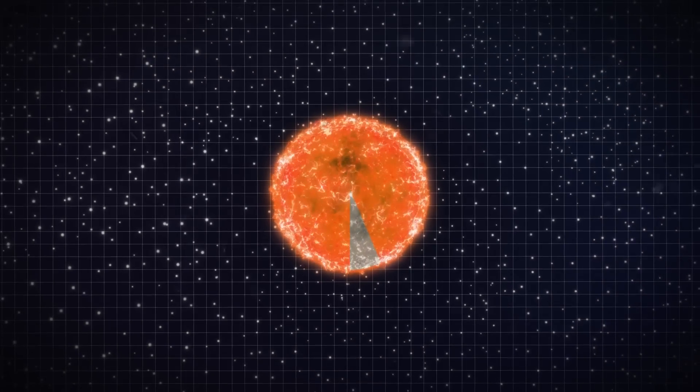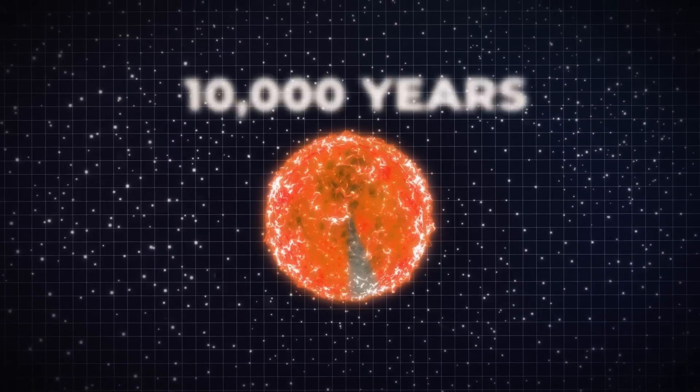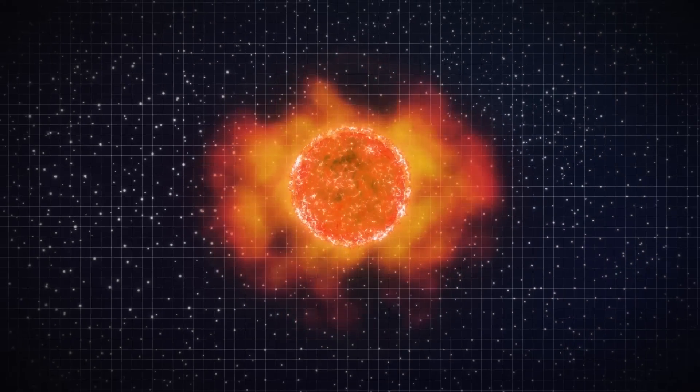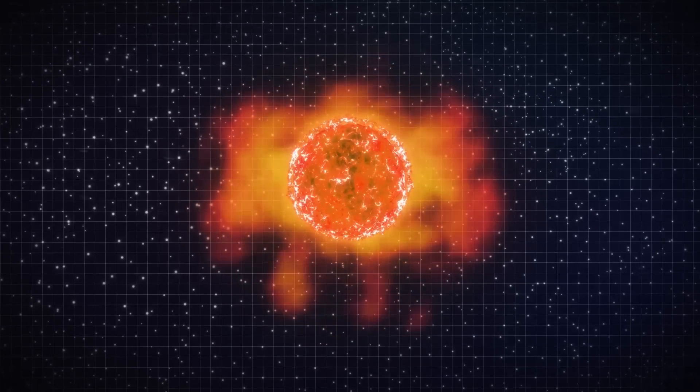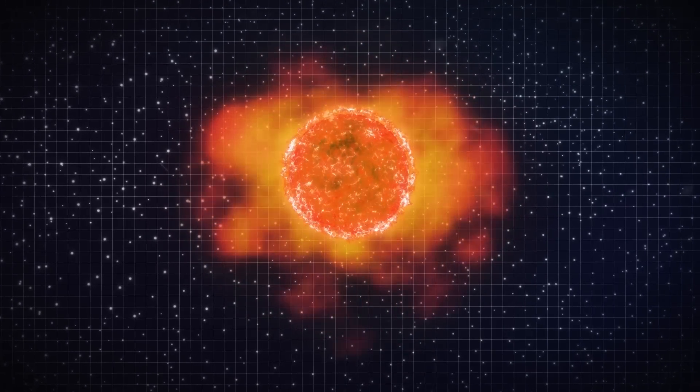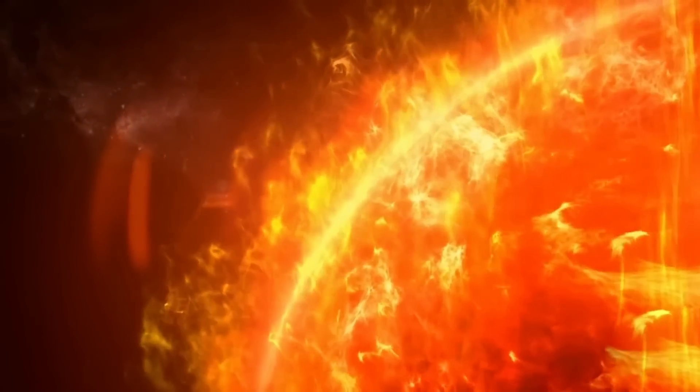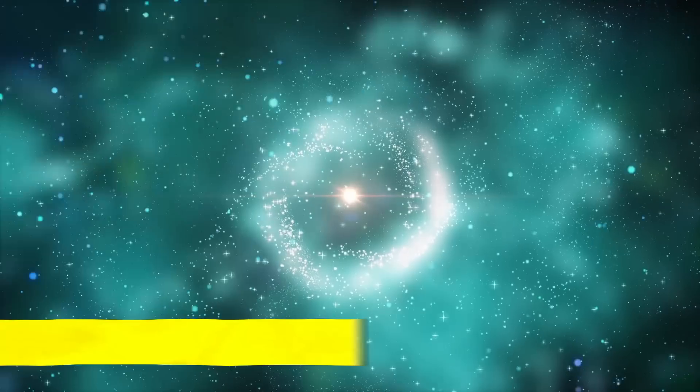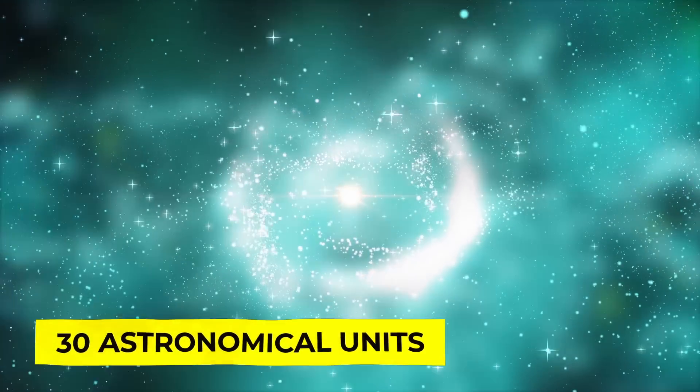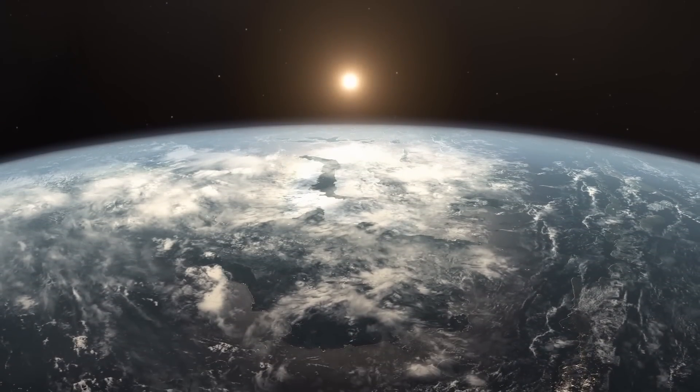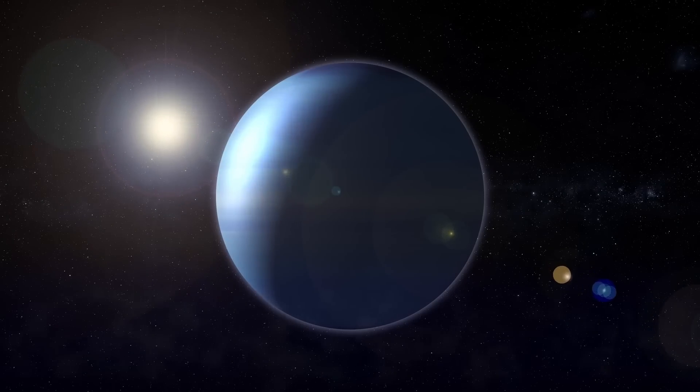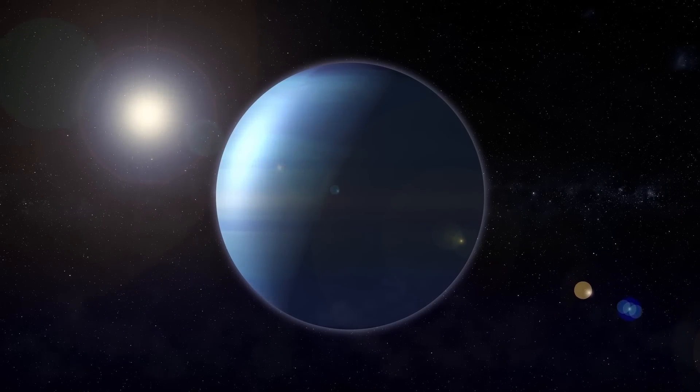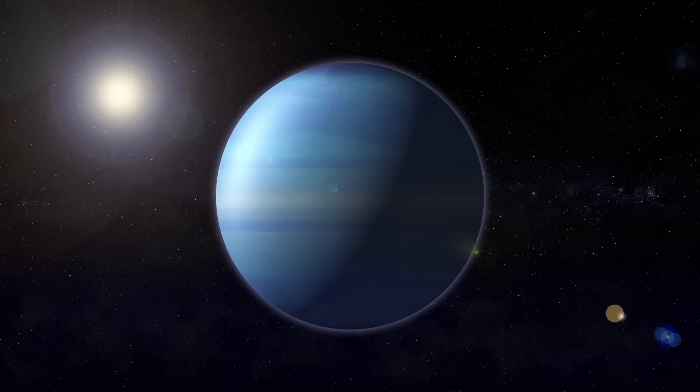Betelgeuse loses about one solar mass every 10,000 years. The red star is surrounded by a nebula because this material is being ejected unevenly from the star in all directions. A cloud of material 250 times larger than this star surrounds Betelgeuse. The size of this nebula is also thought to be 30 astronomical units, or 30 times the Sun-Earth distance. The Sun and Neptune, the furthest planet in the solar system, are separated by this distance.